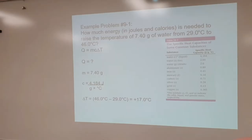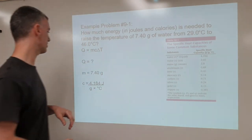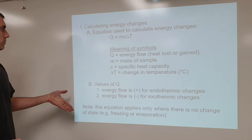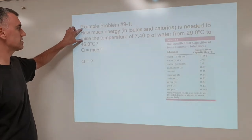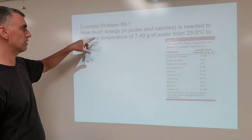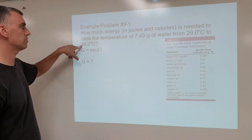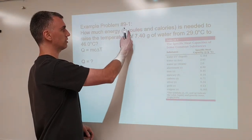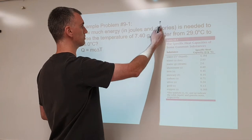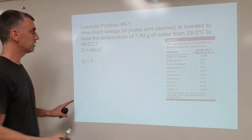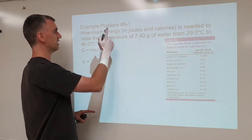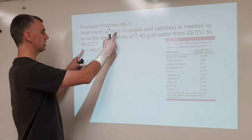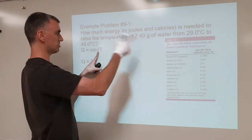More about that in the next notes. Let's look at how you go about solving this. How much energy is needed to raise the temperature of 7.40 grams of water from 29.0 to 46.0 degrees Celsius? This is two calculations — the energy in joules is one calculation, and we'll have to do a separate calculation for units of calories. It's asking how much energy and giving a change in temperature, so you know you're using Q equals mc delta T.